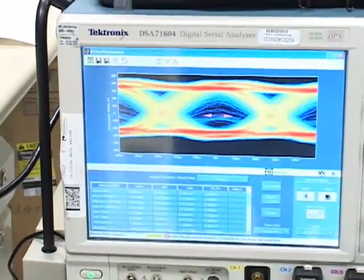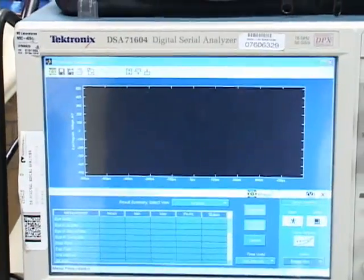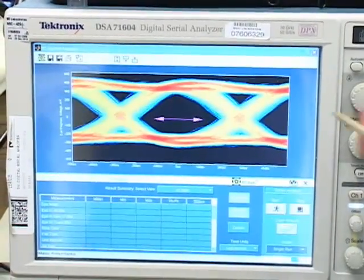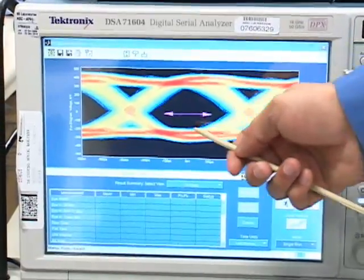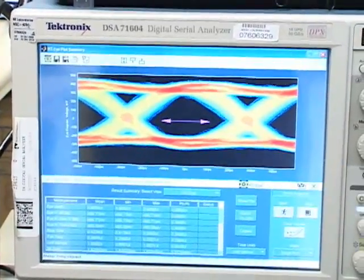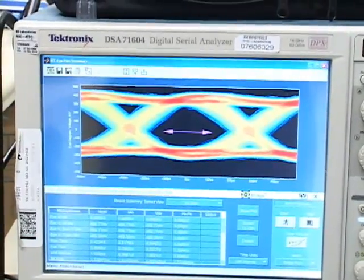Now over here we'll show this new waveform. And as you can see, the eye is much cleaner. There are no transitions in the center of the eye diagram, and the resulting waveform is much cleaner, showing an error-free setup.